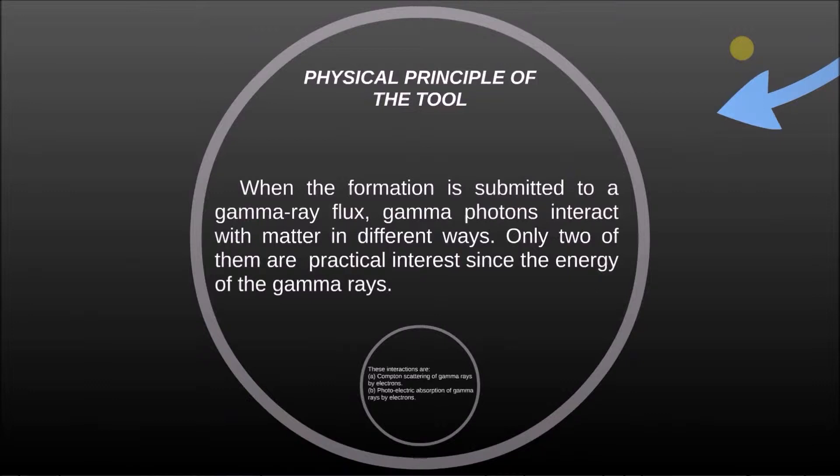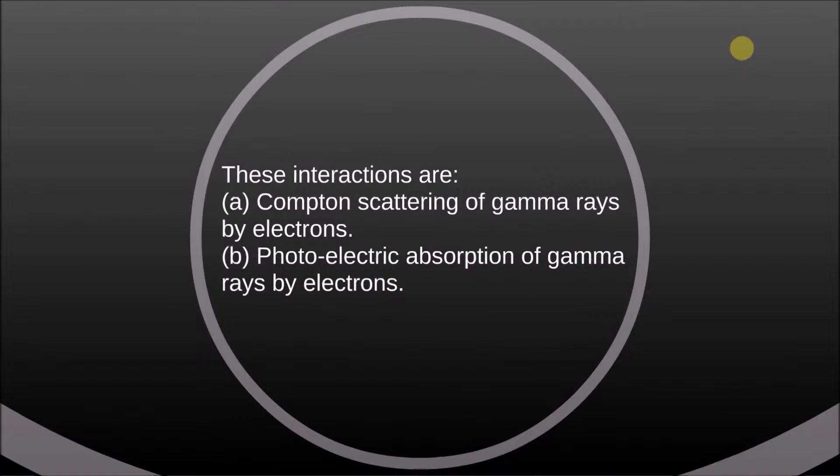Physical principle of the tool: When the formation is submitted to a gamma-ray flux, gamma photons interact with matter in different ways. Only two of them are of practical interest since the energy of the gamma rays. These interactions are Compton scattering of gamma rays by electrons and photoelectric absorption of gamma rays by electrons.